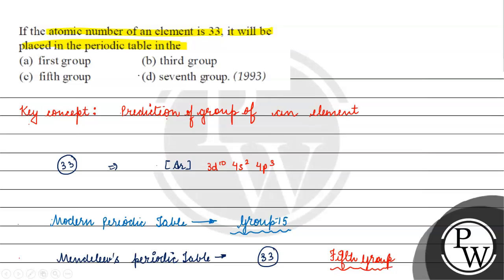In this periodic table, the element with atomic number 33 will be in the fifth group, so option C is correct for this question. Hope you understood it well, thank you and all the best.